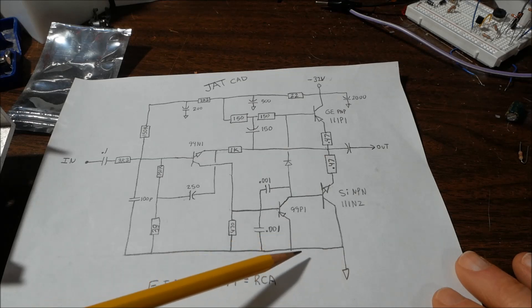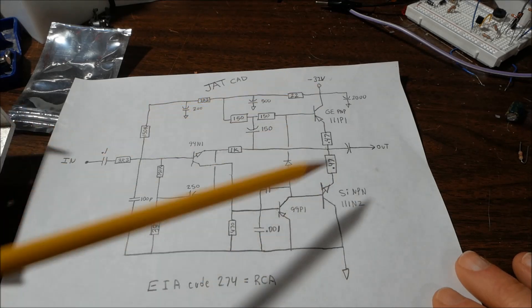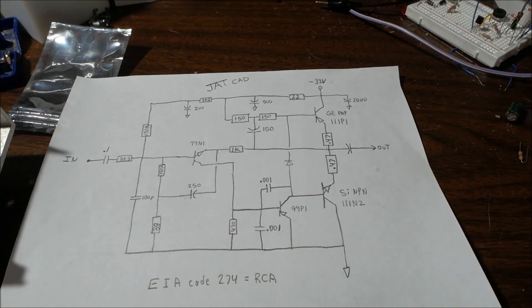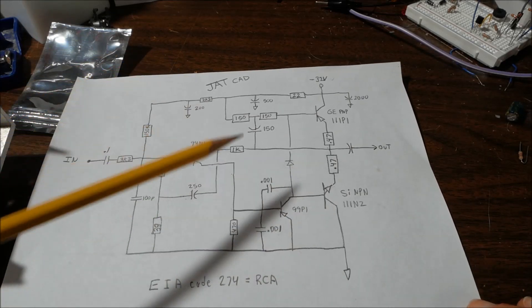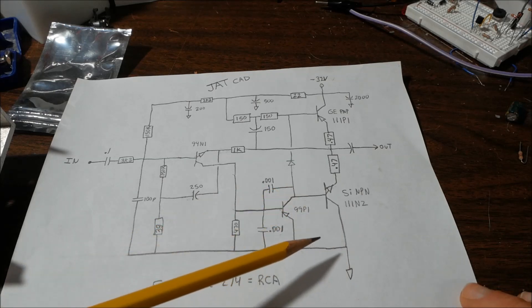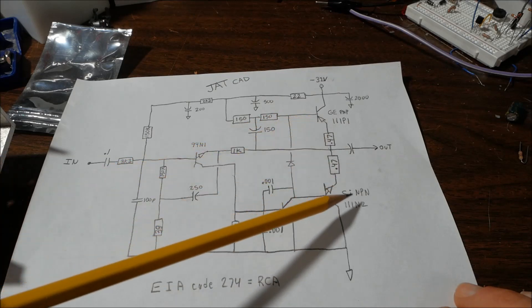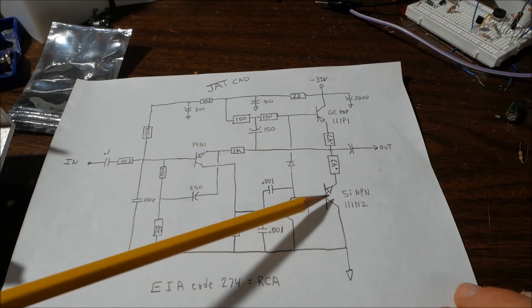In other words, the supply is negative relative to ground. So everything kind of looks upside down in the way this is set up. But they have a PNP germanium transistor here and an NPN silicon transistor.